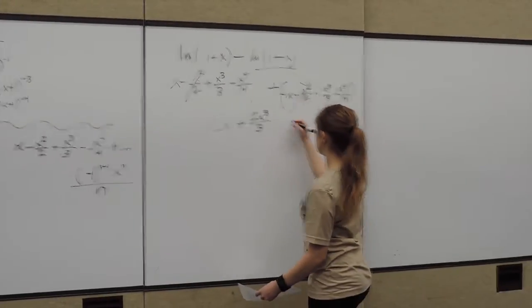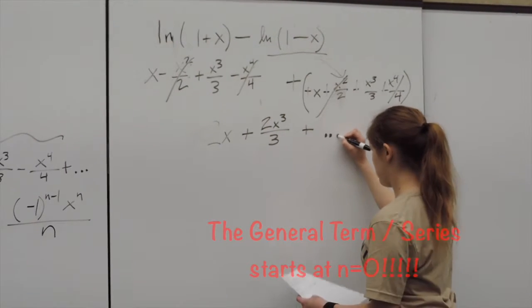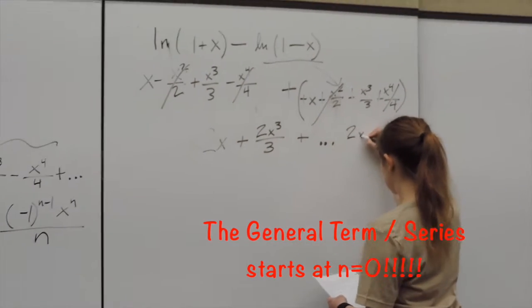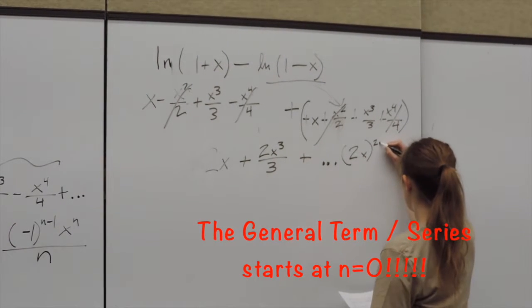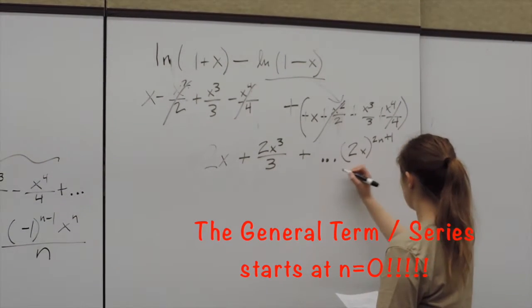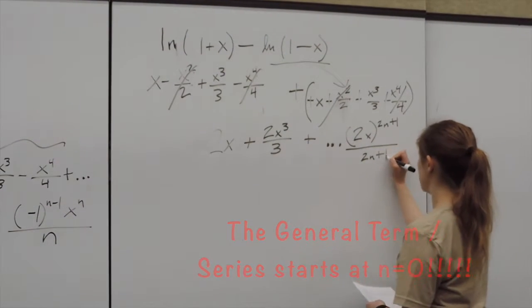And for the general term you can find the pattern, and it's 2x to the 2n plus 1 all over 2n plus 1.